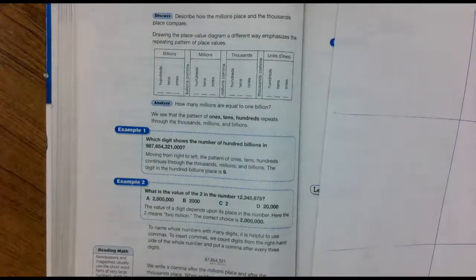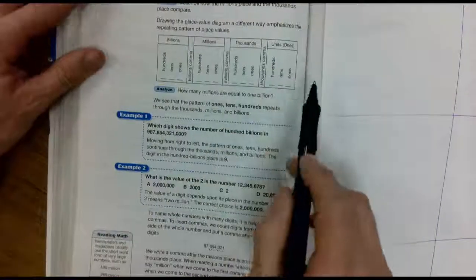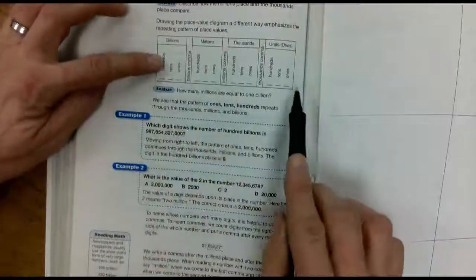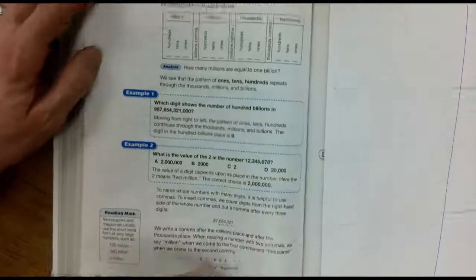Here comes some of our questions which are fairly easy. Which digit shows the number of hundred billions? So just go to the billions and the hundred billions and count. One, two, three, four, five, six, seven, eight, nine, ten, eleven, twelve. The twelfth one.